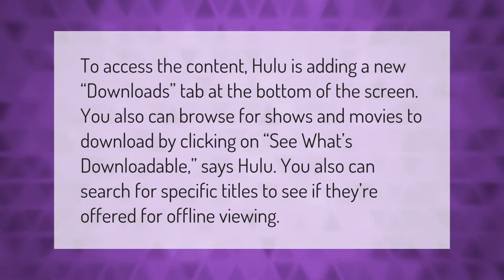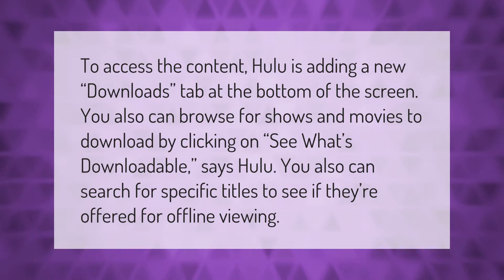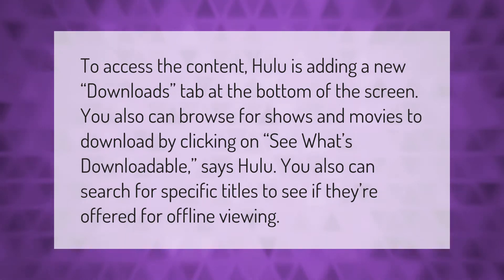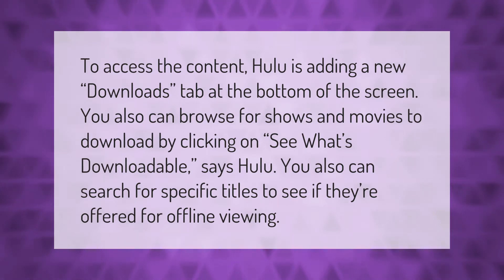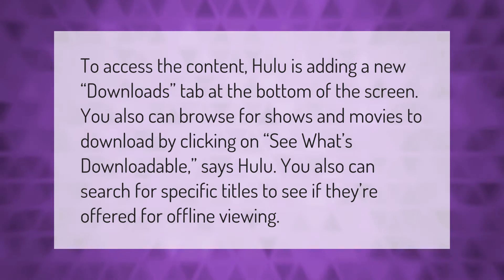To access the content, Hulu is adding a new downloads tab at the bottom of the screen. You also can browse for shows and movies to download by clicking on 'See what's downloadable,' says Hulu. You also can search for specific titles to see if they're offered for offline viewing.